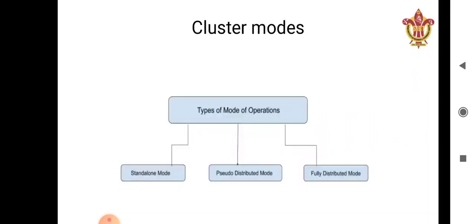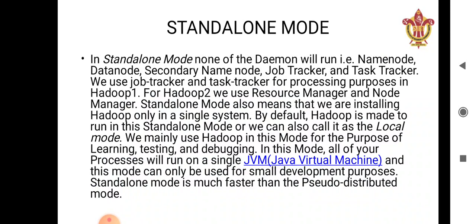There are three modes of operation in Hadoop: standalone mode, pseudo distributed mode, and fully distributed mode. Whenever we are working on a Hadoop cluster it can run in any of these three modes. Each mode has its own functionality and features which differentiate it from the others. Let's see each one in detail.